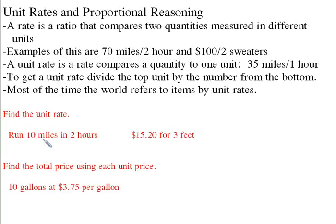Find a unit rate. Run 10 miles in two hours. One of the things to realize is that most of the time when we come up with a unit rate, we're saying that the second one is the bottom of the unit rate. So this would be 10 miles. You still should write out the units, 10 miles per two hours.